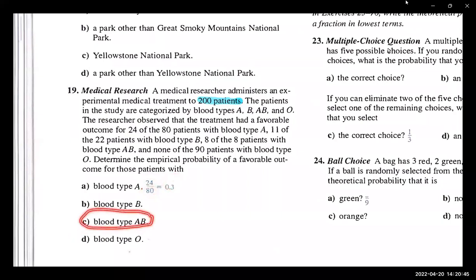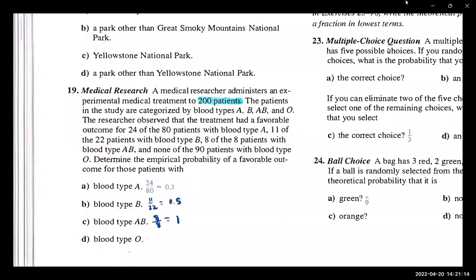Let's just do type AB this time. Type AB would have been 8 out of 8, which is 1. And type B would have been 11 out of 22, which is 0.5, right? Half. And then type O would have been 0 out of 90, which is 0.